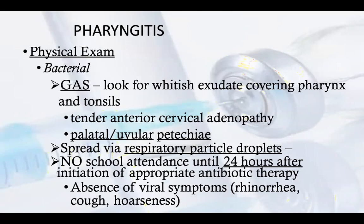On physical examination, if it is bacterial Group A Streptococcus, look for whitish exudate covering the pharynx and tonsils, tender anterior cervical adenopathy, and palatal or uvular petechiae. It spreads via respiratory particle droplets. No school attendance is allowed until 24 hours after initiation of appropriate antibiotic therapy. Absence of viral symptoms such as rhinorrhea, cough, or hoarseness is notable.